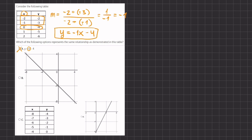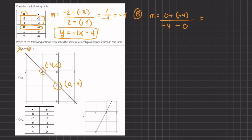For option B, we can automatically see that the y-intercept is correct because it crosses at negative four, but we need to calculate the slope. Picking two points, negative four comma zero and zero comma negative four, we get zero minus negative four divided by negative four minus zero, which gives us four divided by negative four, so our slope is negative one. Putting graph B into point slope form gives y equals negative one x minus four, which exactly matches our table, so B is the correct answer.